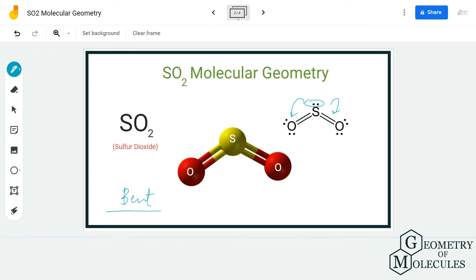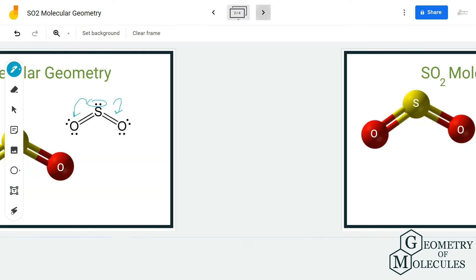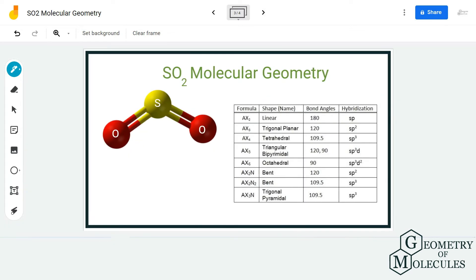The molecular geometry according to VSEPR theory is bent, but we are also going to use AXN notation method to find out if we are on the right track. A stands for the central atom, X is the number of atoms that are forming bonds with the central atom, and N is the number of lone pairs of electrons on the central atom.